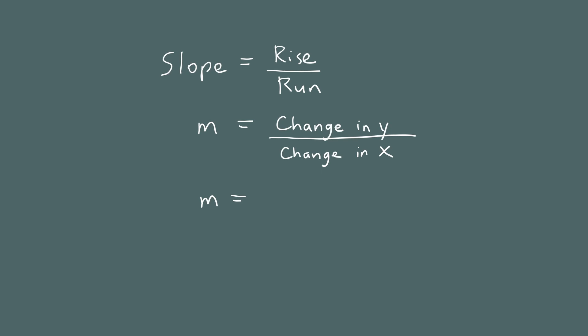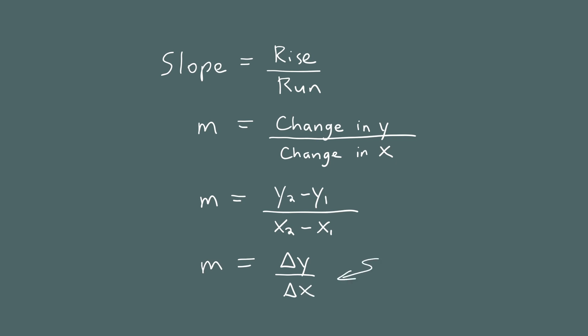Another way to describe this: the change in y is the difference in the y coordinates between two points. Here, y2 is the y coordinate of point 2, and y1 is the y coordinate of point 1. The run, or change in x, is x2 minus x1. In mathematics, the capital letter delta stands for the difference between two numbers — when you take the difference, you're just subtracting one from the other.